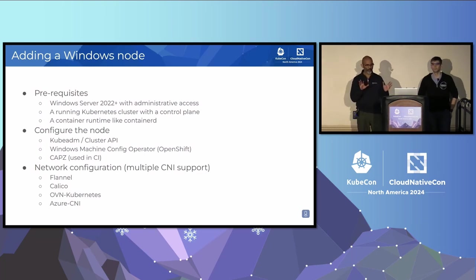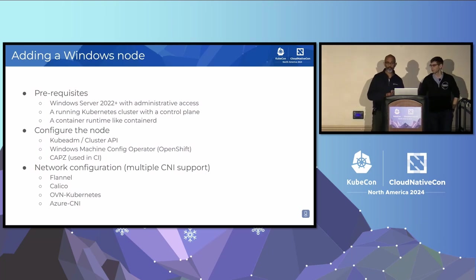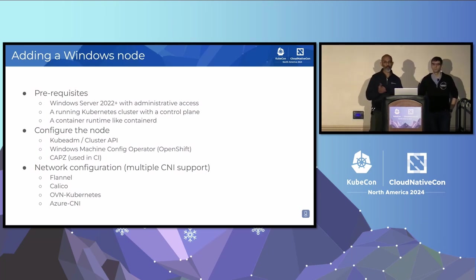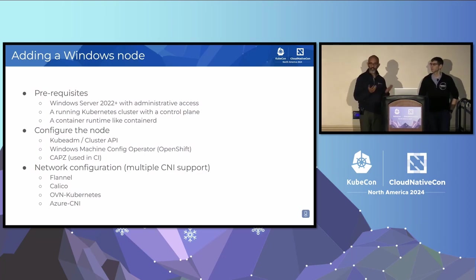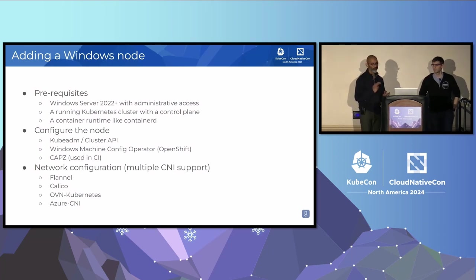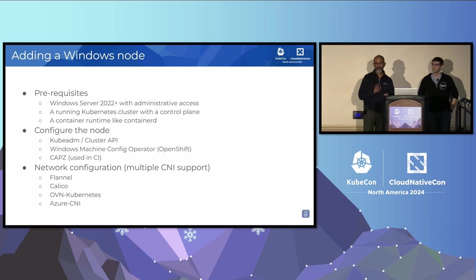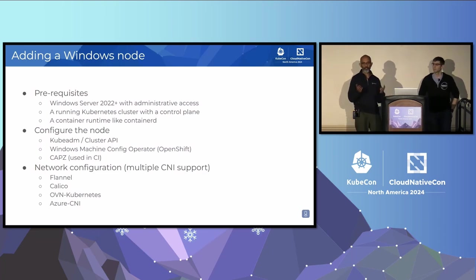At the end of this, you have your kubelet up and running. You've got to do some network configuration, otherwise you're not going to be able to really do anything with the workload you bring up on your node. Multiple CNIs are supported — you could use Flannel, Calico, OVN Kubernetes, or Azure CNI. This is really dependent upon what provider you use; your provider will recommend a CNI, so just go with that.